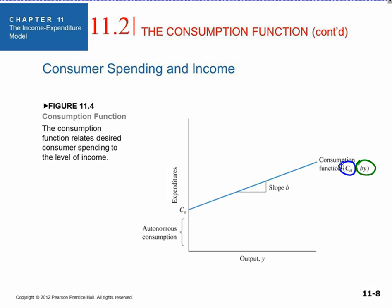Graphically, if anything does not vary with income, it would be right here at the y-intercept — C of A — and that's autonomous consumption. Whatever consumption increases with levels of output occurs because of induced consumption. This consumption line slopes upwards at a slope of B, which is the marginal propensity to consume.